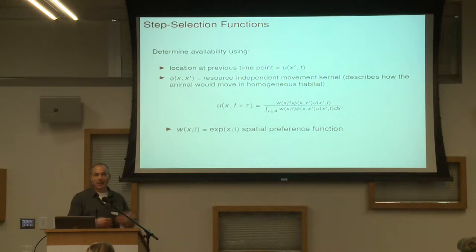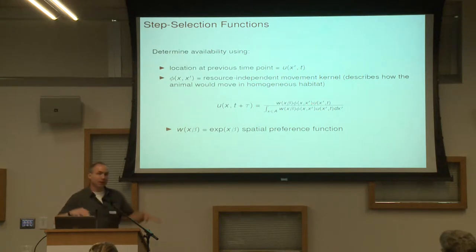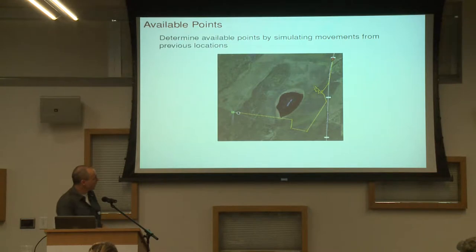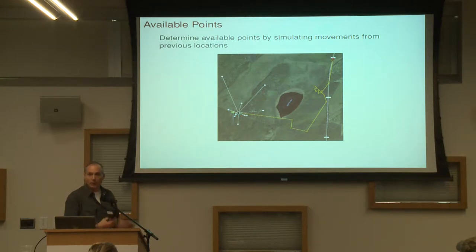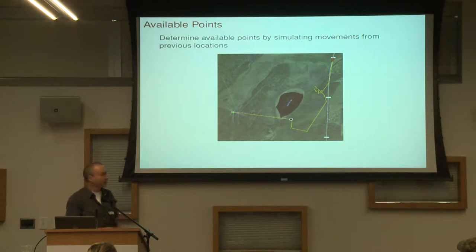You might think about an animal that tends to take short steps, but if there's coffee in the back of the room, maybe it's more likely to take a longer step and go to where the coffee is. So you think about movement if the environment was homogeneous, and then overlaid is this function that creates bumps in the landscape that are more attractive. Here's a visual — you can consider a current location of an animal and generate available points by simulating how this animal might move, just its characteristic movement. You could match all of those points, capture the characteristics at those points where it might move, and compare to where it actually did move. So now we've got matched data where each used location is matched to a set of available points generated from the previous location.